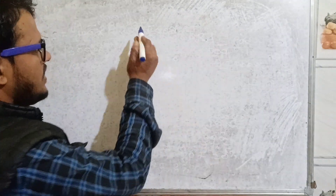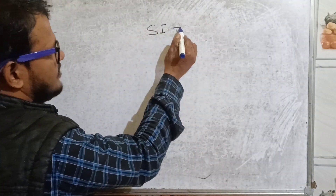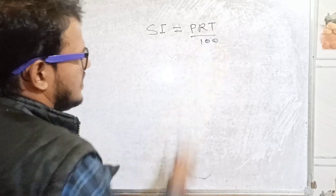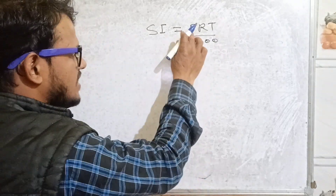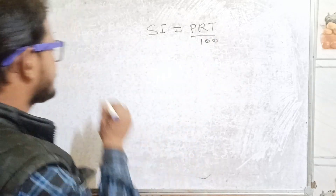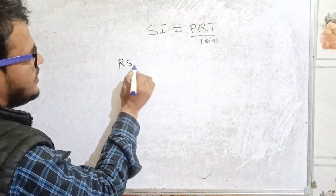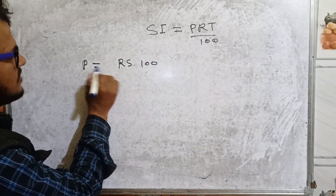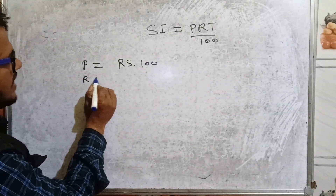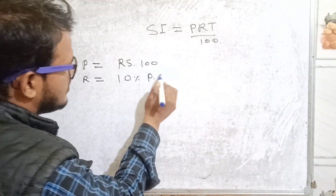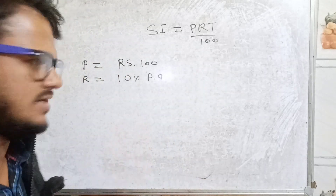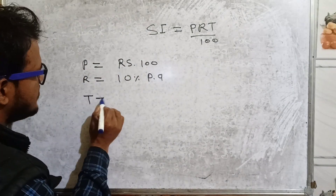The simple interest formula is SI = PRT divided by 100, where P is the principal, R is the rate of interest, and T is the time period. You have borrowed 100 rupees, so the principal is equal to 100 rupees. The rate of interest is 10 percent per annum, meaning every year he is charging 10 percent, and the time period is two years.